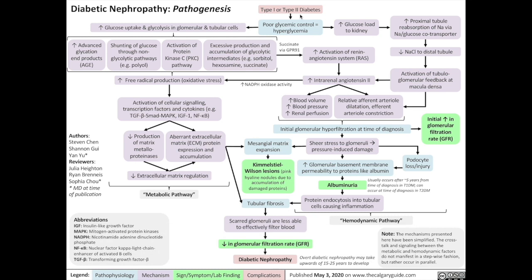Diabetic nephropathy is a complication involving the kidneys that can arise as a result of type 1 or type 2 diabetes. Poor glycemic control resulting in chronic hyperglycemia has two main effects on the kidneys: at the cellular level, known as the metabolic pathway, and on a more macro kidney level, known as the hemodynamic pathway. We'll talk about the metabolic pathway first.